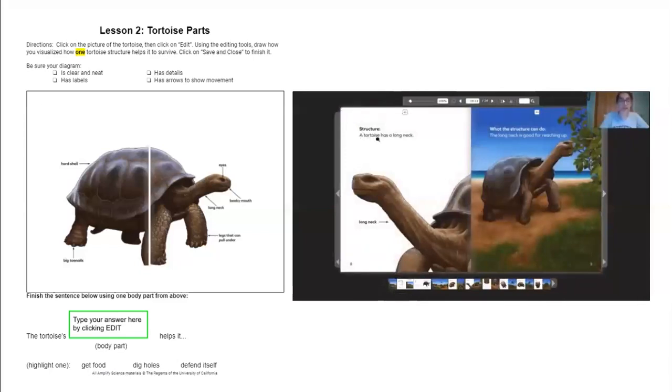Structure: A tortoise has a long neck. What the structure can do: the long neck is good for reaching up. So the tortoise uses this structure, its long neck, to reach up to the food that it's high up and that it needs. So I'm going to visualize, make a movie in my mind that the neck is stretching out and reaching up to help the tortoise get the leaf with its beaky mouth, rip it off, and chew it. Did you do it too? Did you do it too? Okay, cool.